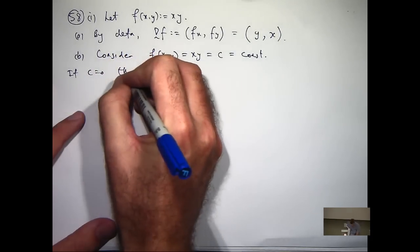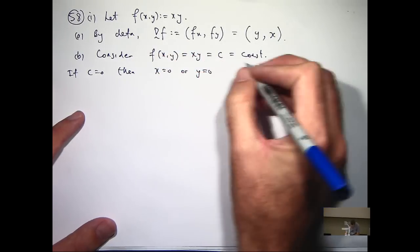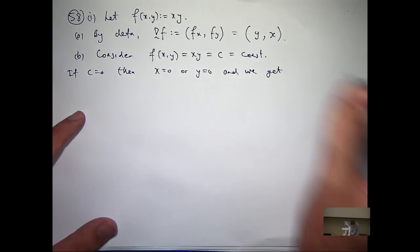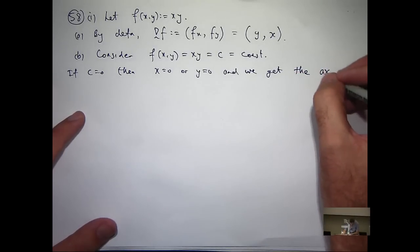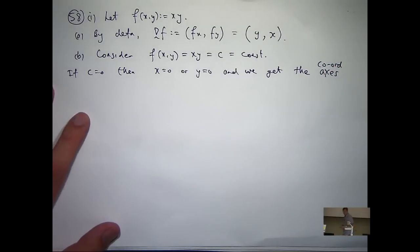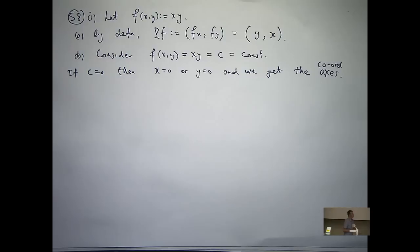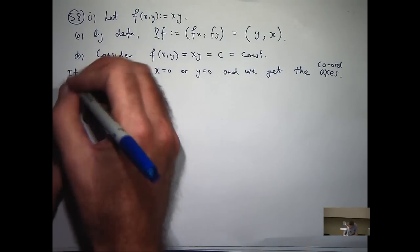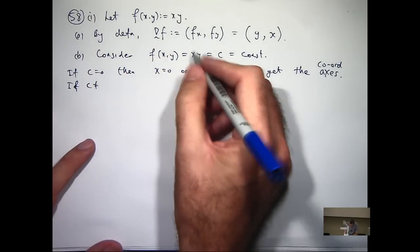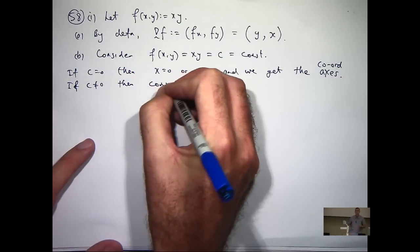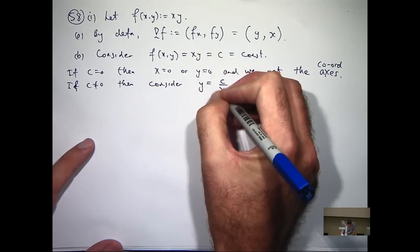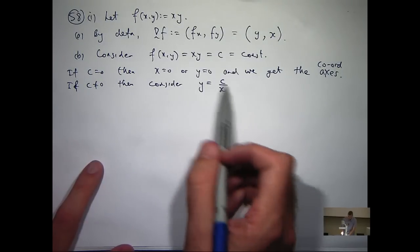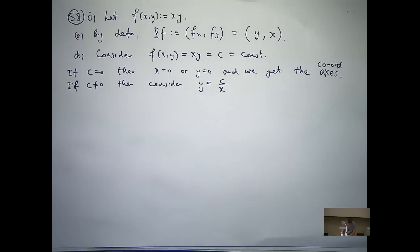So we get the axes, the coordinate axes. I'll draw them in in a second. Now, if c is anything other than 0, we can rearrange this and turn it into something we can consider. So this then, for different values of c, what's y equals c on x going to give? So what kind of curves? Yes. Very good. Hyperbolas.